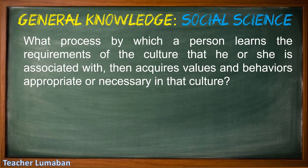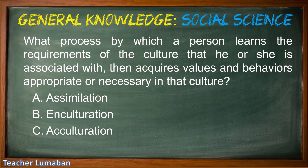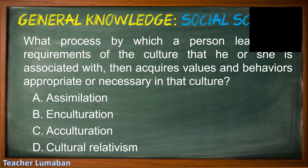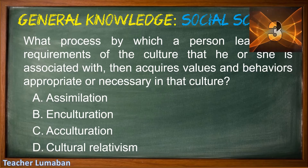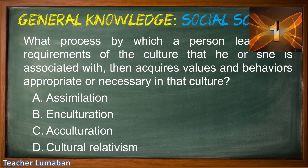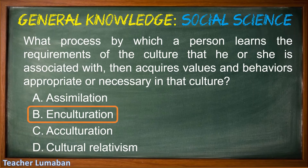What process by which a person learns the requirements of the culture that he or she is associated with, and then acquires values and behaviors appropriate or necessary in that culture? Letter A, assimilation; Letter B, inculturation; Letter C, acculturation; Letter D, cultural relativism. Please choose the suitable answer in 5 seconds. 5, 4, 3, 2, 1. The correct answer is Letter B, inculturation.